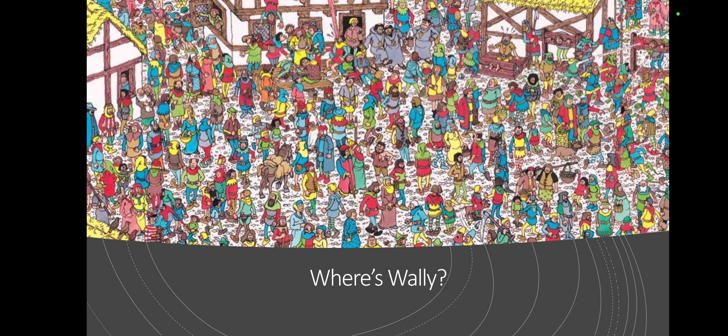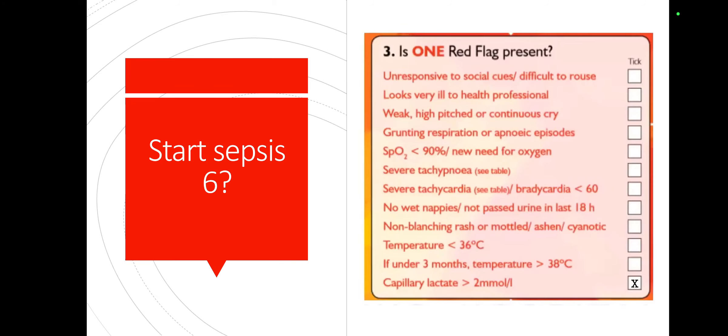Now we know some identifiers about sepsis — how do we manage it? In the UK we have what we call Sepsis 6, which reminds us that for any child with suspected sepsis we need to provide oxygen support, get a blood culture and lactate level, start antibiotics empirically as soon as possible, consider a fluid bolus, and monitor urine output. The problem is identifying which child to start this process for — it's as difficult as finding Wally when you're looking for sepsis in children.